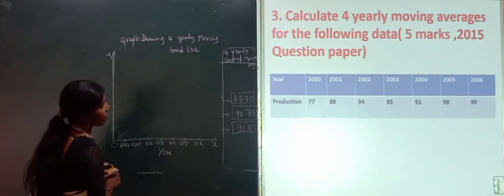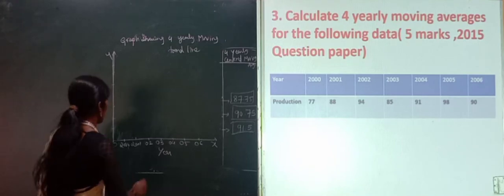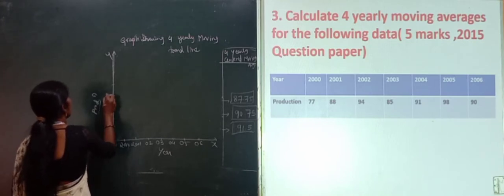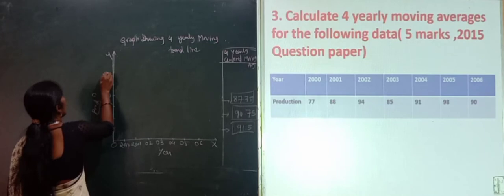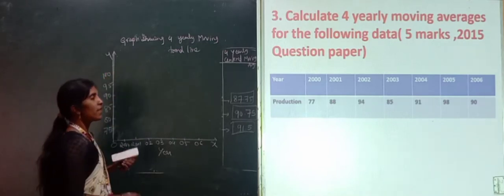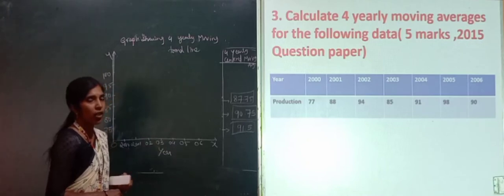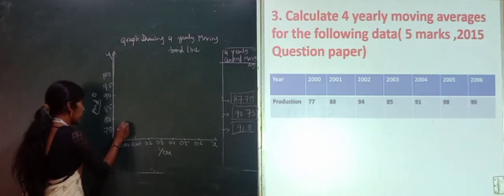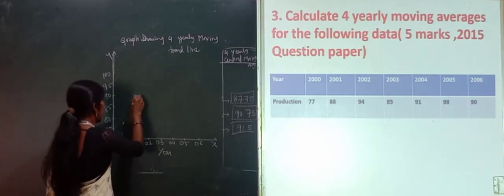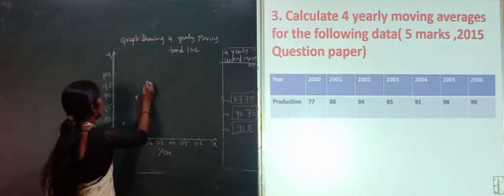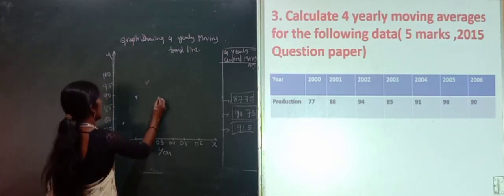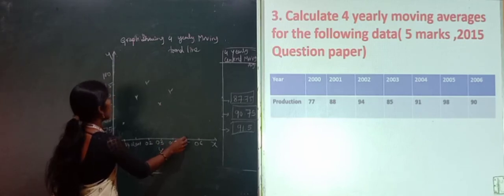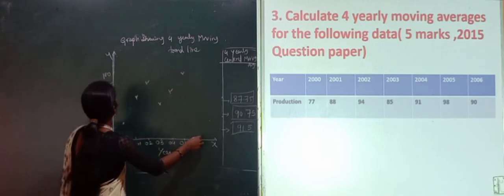Production starts at 77, so we take intervals of 5: 75, 80, 85, 90, 95, 100. First we plot the actual data points: year 2000 with production 77, 2001 with 88, then 94, then 85, then 91, then 98, and finally 90.